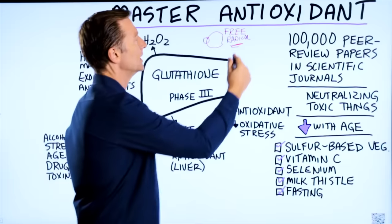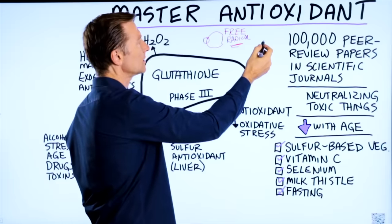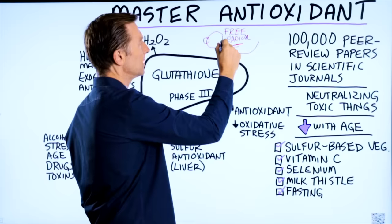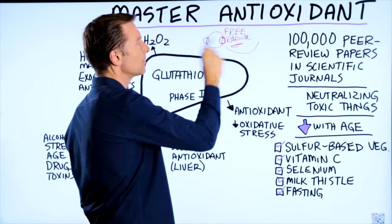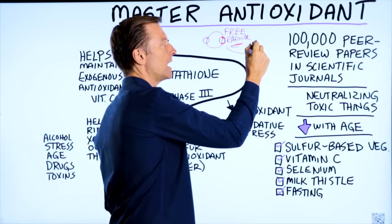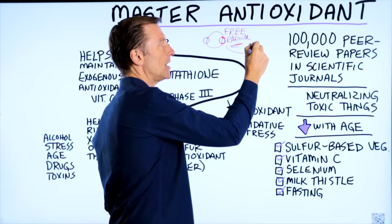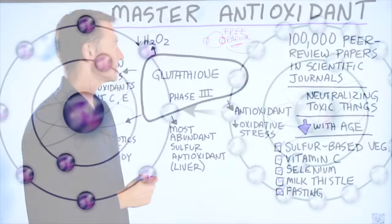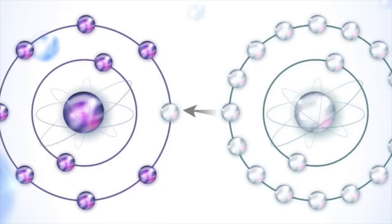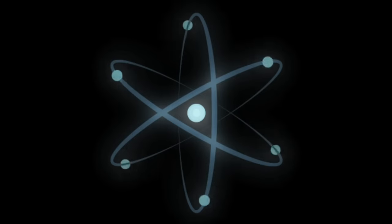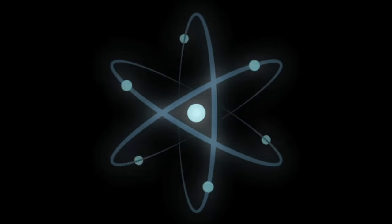So an antioxidant comes along and donates an electron to balance it out and stabilize it. The problem is that antioxidant now loses its electron and it becomes unstable. So it has to get an electron from another antioxidant. This is why you have antioxidants in networks.